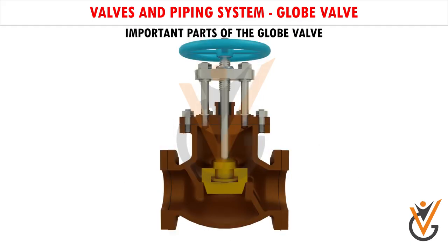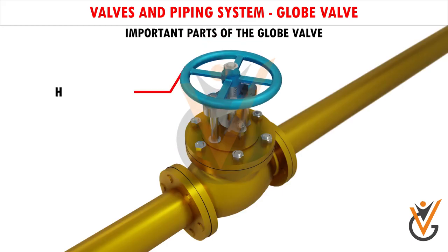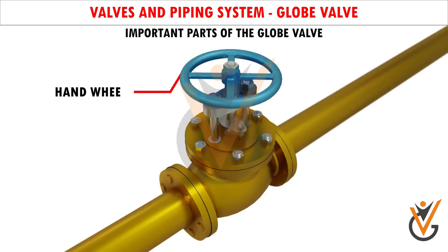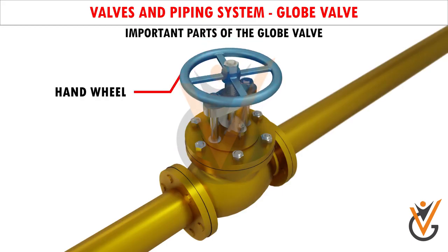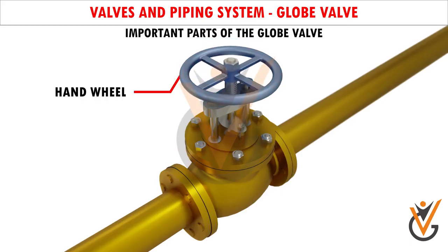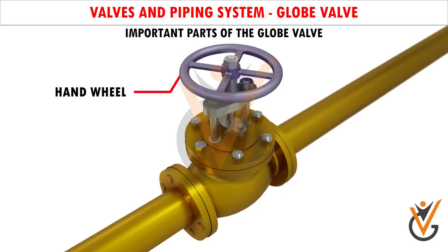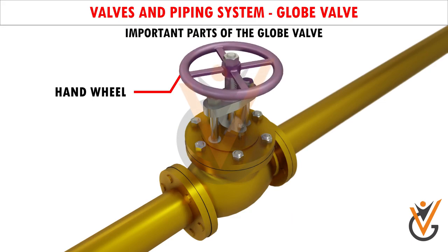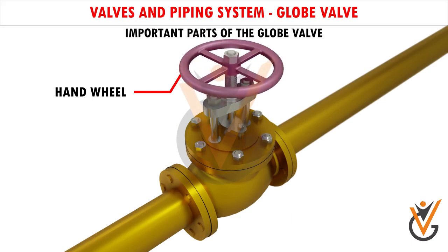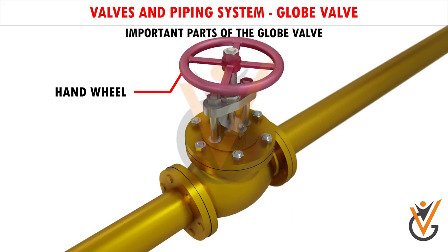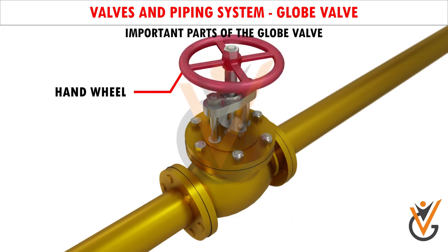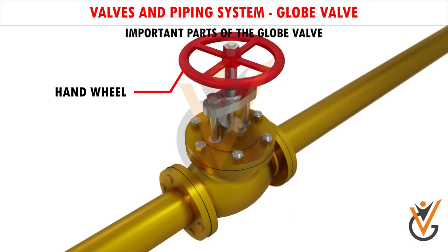Important Parts of the Globe Valve. Hand Wheel: It is provided to open and close the valve. The bigger the wheel, the less effort is required to operate the valve, as the torque applied is more.